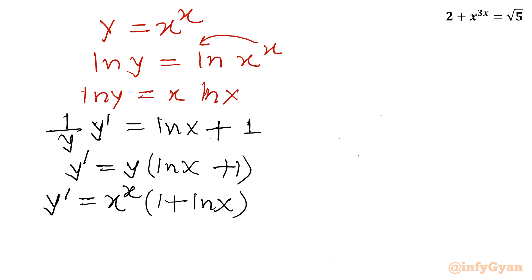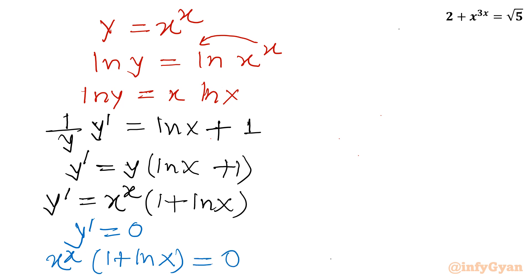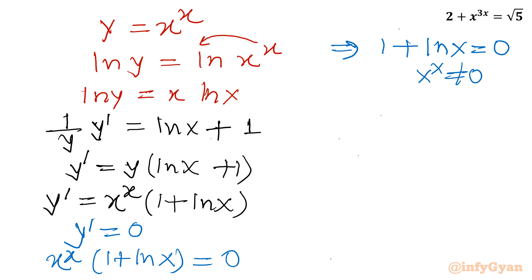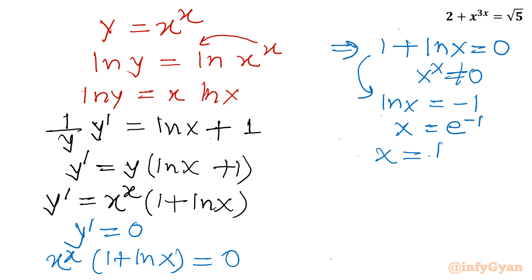For critical points, we set y' = 0: x^x·(1 + ln x) = 0. Since x^x cannot be zero, we need 1 + ln x = 0, giving ln x = −1, so x = e^(−1) = 1/e ≈ 0.367.